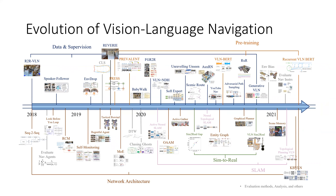In the afternoon, we will switch gears from vision language pre-training to vision language navigation. The first VLN task R2R was released in 2018, starting the discussion on using vision and language in a robotics environment. Since then, VLN has evolved into an essential task in embodied AI. Developed methods range from earlier speaker-follower models to recent self-supervised models.